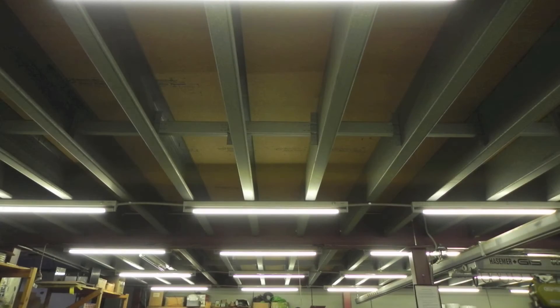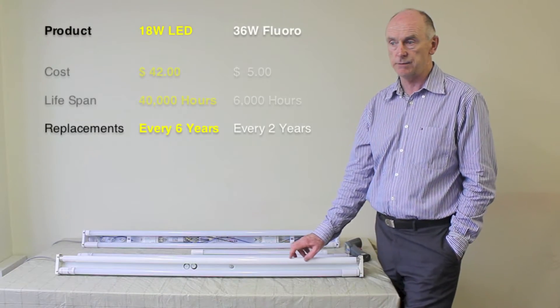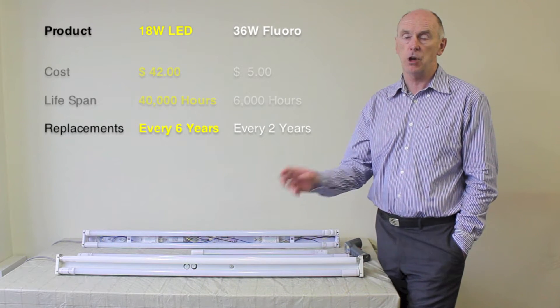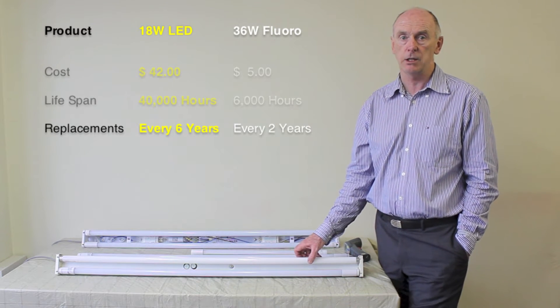With a fluorescent tube, it normally might have a life of say 6,000 hours. So you've got a seven times factor there of how much life you'll have.